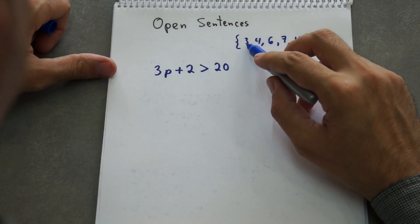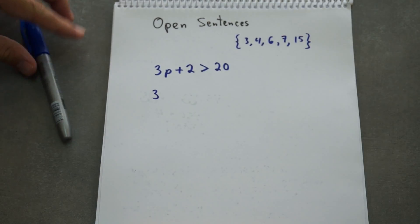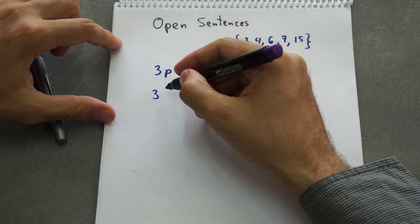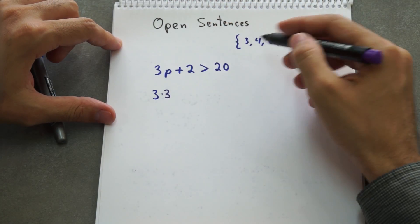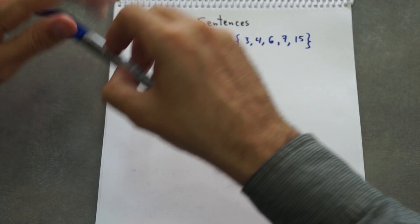For example, in case of 3, we have 3 times 3, which is the number we are replacing, plus 2.